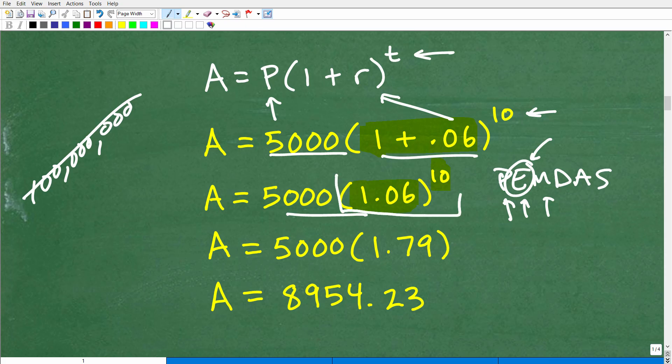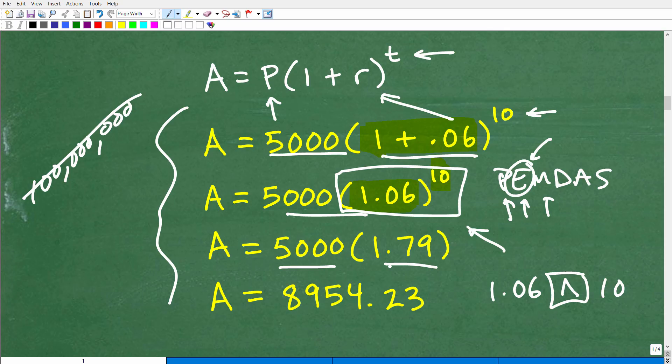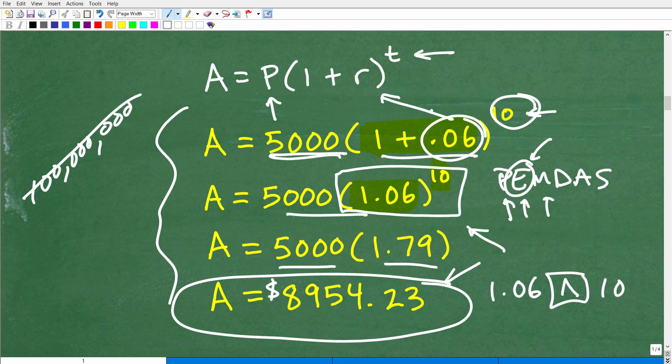We've got to figure out what 1.06 to the 10th power is on our calculator. So you just go 1.06, use that caret function. Most of your calculators, to the 10th power. And when you do that, you'll get 1.79. Notice how I'm showing all my work like this. This is what you need to be doing as well. Now we can take that 5,000 and multiply by 1.79, and you'll get this answer. 8,954.23. That is the correct answer. We are talking about dollars. So this is how much this $5,000 grew over 10 years at 6% annual compound interest. It grew into $8,954.23. And of course, you could just take the difference of the $5,000 and this amount, and that's how much you actually made on your investment.